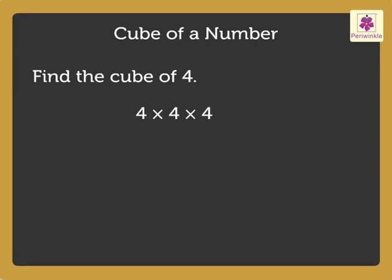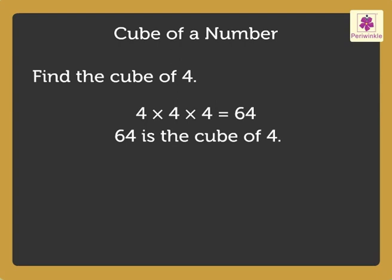When 4 is multiplied by itself three times, we get the answer as 64. That means 64 is the cube of 4. We write it as 4 into 4 into 4, which is equal to 4 raised to the power of 3, which is equal to 64. We read it as 4 cube or 4 raised to the power of 3 is 64.